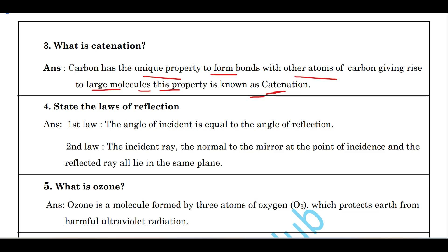State the laws of reflection. The first law states that the angle of incidence is equal to the angle of reflection. The second law states that the incident ray, the normal to the mirror at the point of incidence, and the reflected ray all lie in the same plane.